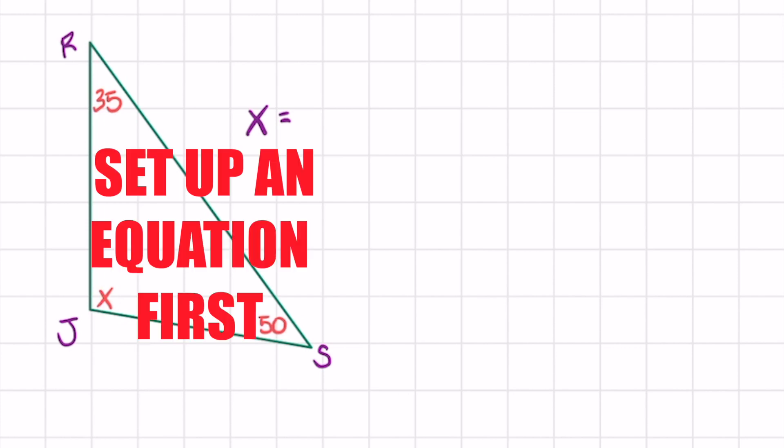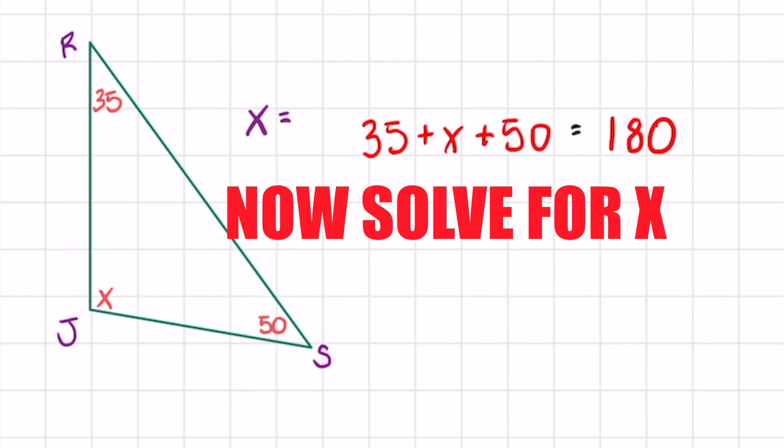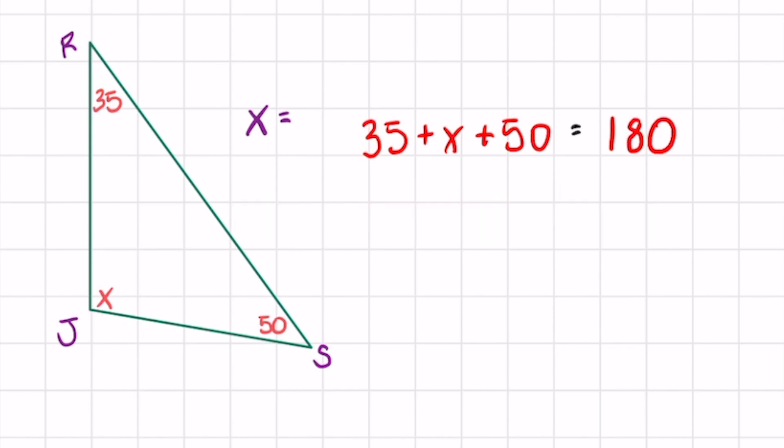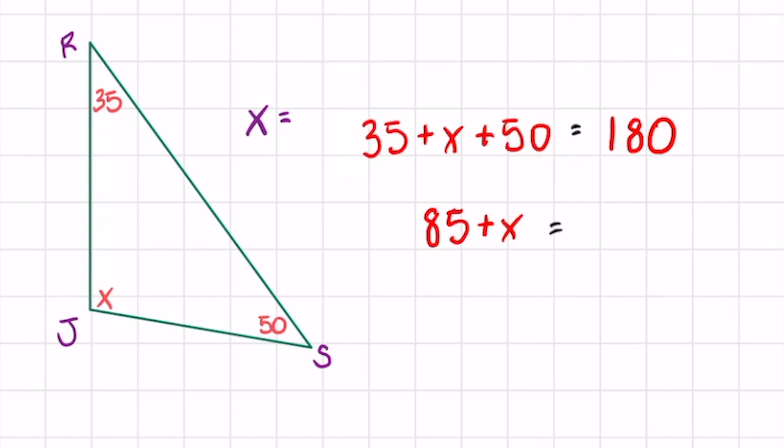The only way not to mess this up in the beginning is to set up an equation. Let's add everything on the inside. It doesn't matter what order you do it. You could have done x plus 35 plus 50, that's going to equal 180. From here it's just a simple algebra problem. First combine like terms, so 35 and 50 gives me 85 plus x equals 180. Then subtract 85 on both sides and you're done. X equals 95.